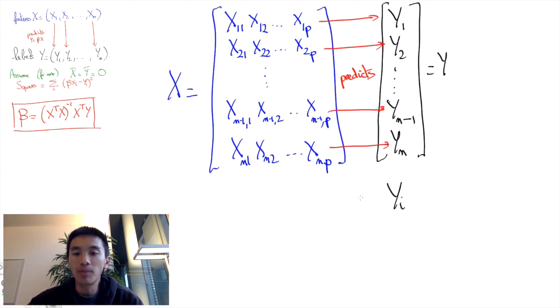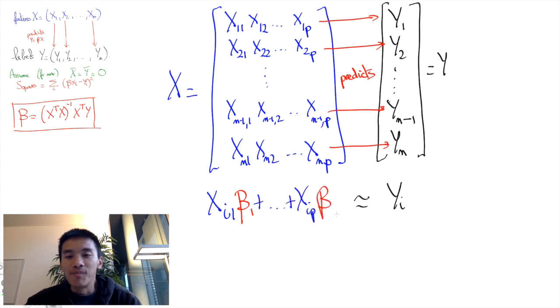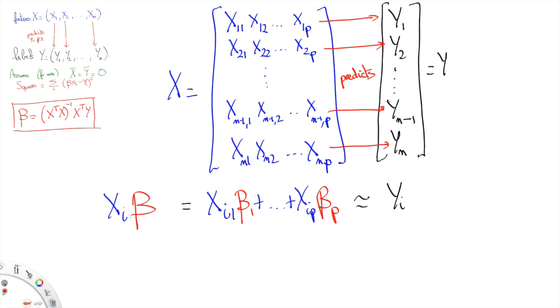In other words, we want to approximate yi as a linear combination of the xij's. That is xi1 times some coefficient beta1 plus xi2 times beta2, and so on until xip*betap. This can be rewritten as the vector xi times the vector beta, where beta is now a p-dimensional vector of slopes.